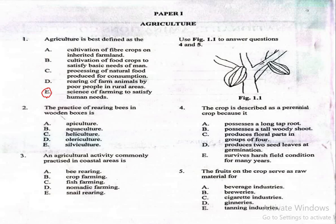Question 2. The practice of rearing bees in wooden boxes is: A. Apiculture, B. Aquaculture, C. Heliculture, D. Olericulture, E. Silviculture. The correct answer is apiculture, which is option A. Apiculture refers to beekeeping or the rearing of bees, usually for honey and other products. Wooden boxes are commonly used for that.